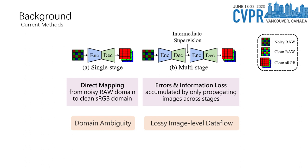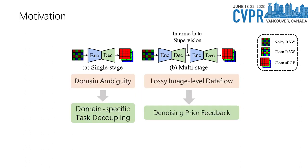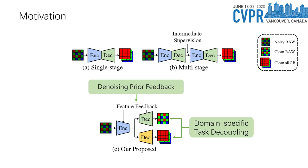For multi-stage methods, these methods break down the enhancement process into multiple stages. However, they only leverage lossy image-level dataflow between stages. This means that any errors or inaccuracies in one stage are passed onto the next and accumulate throughout the process. This error accumulation often leads to insufficient detailed recovery in the final results, limiting the effectiveness of multi-stage methods. To address these two issues, we propose domain-specific task decoupling and denoising prior feedback respectively as our solutions.